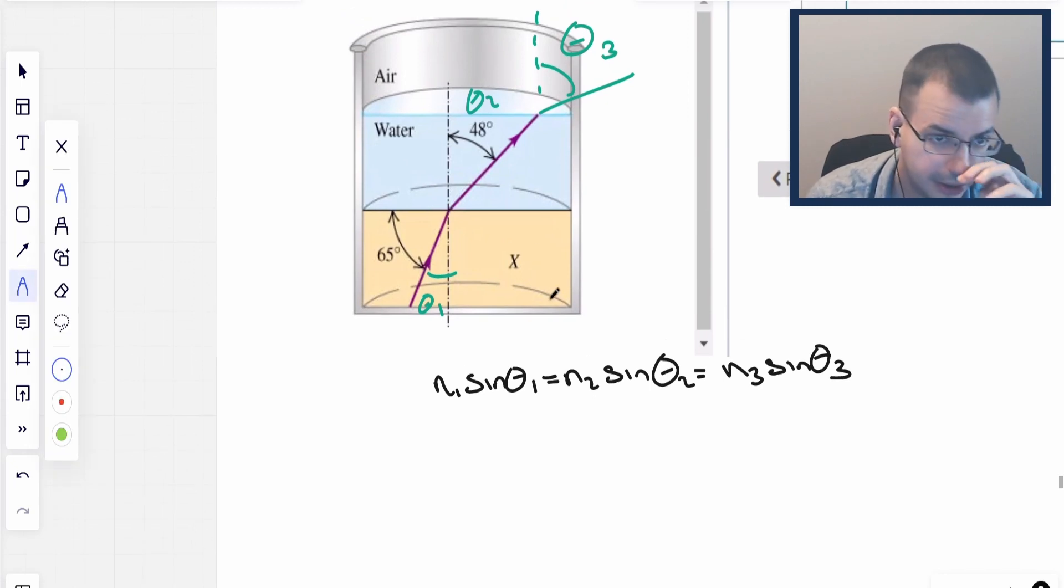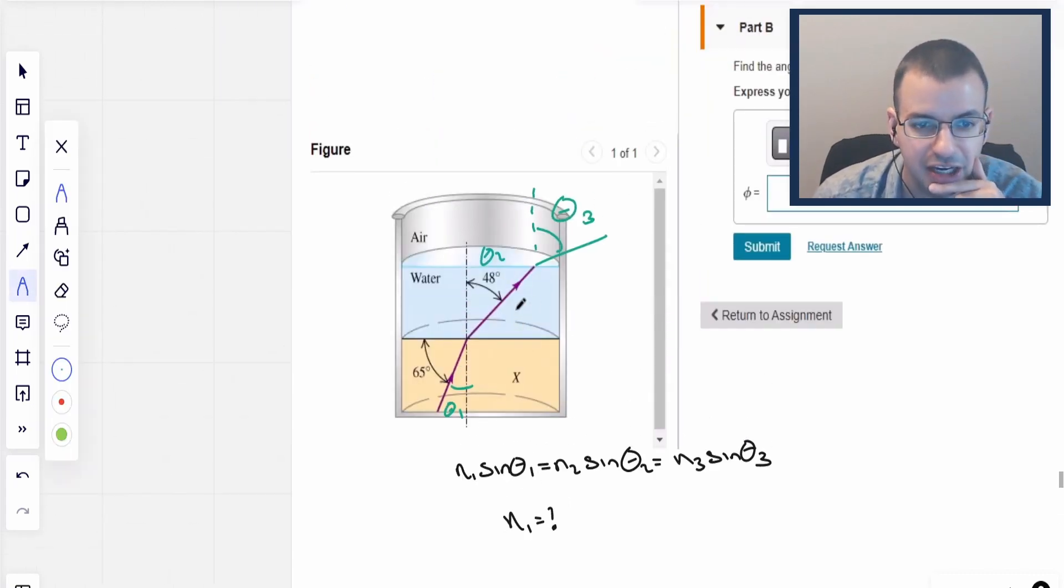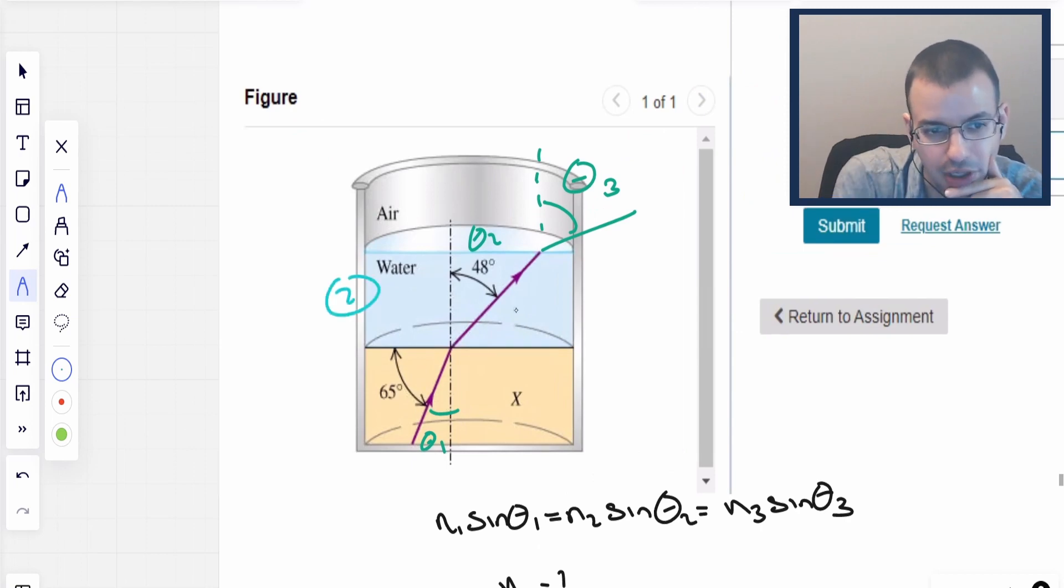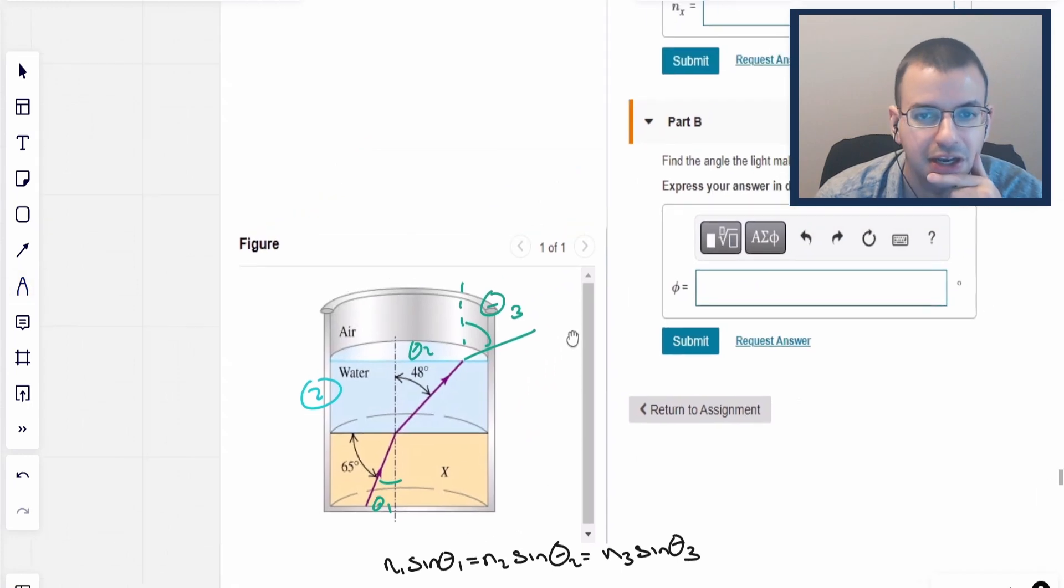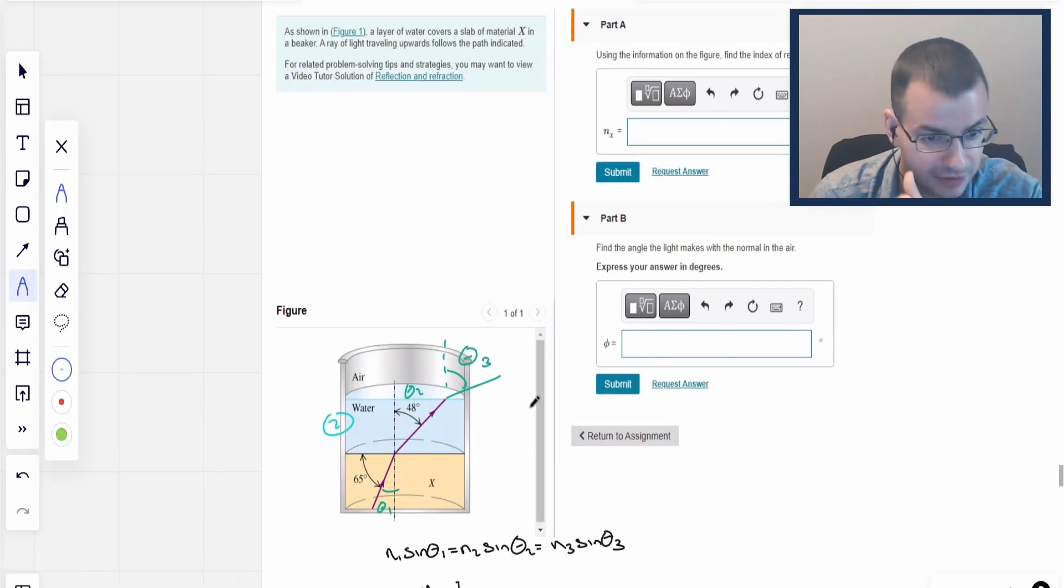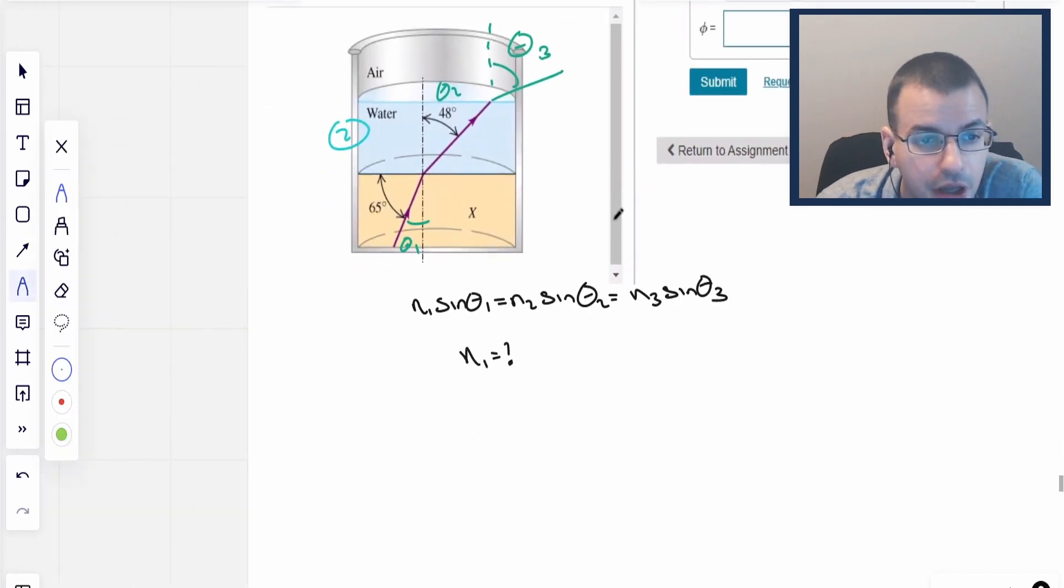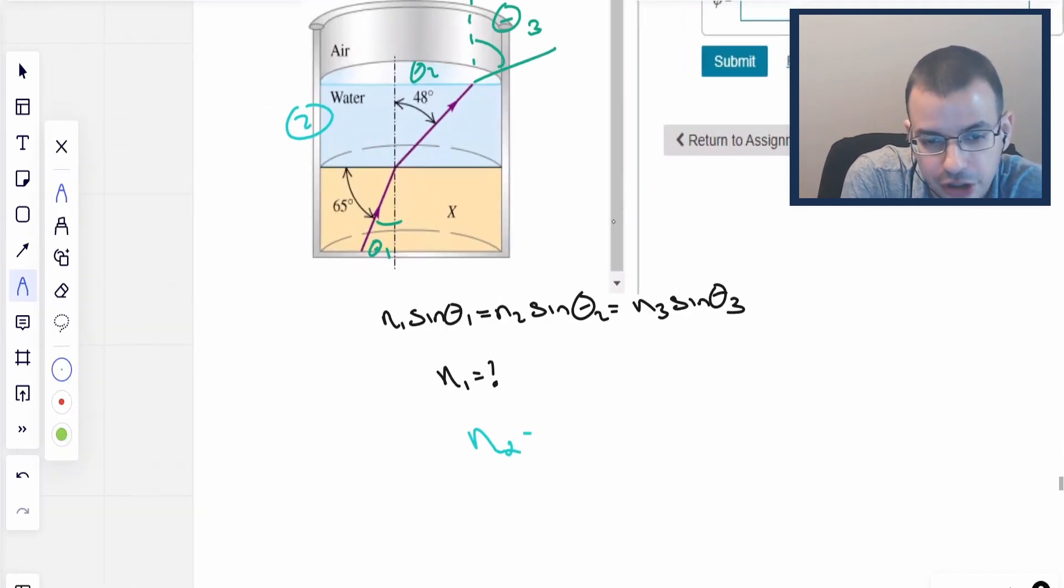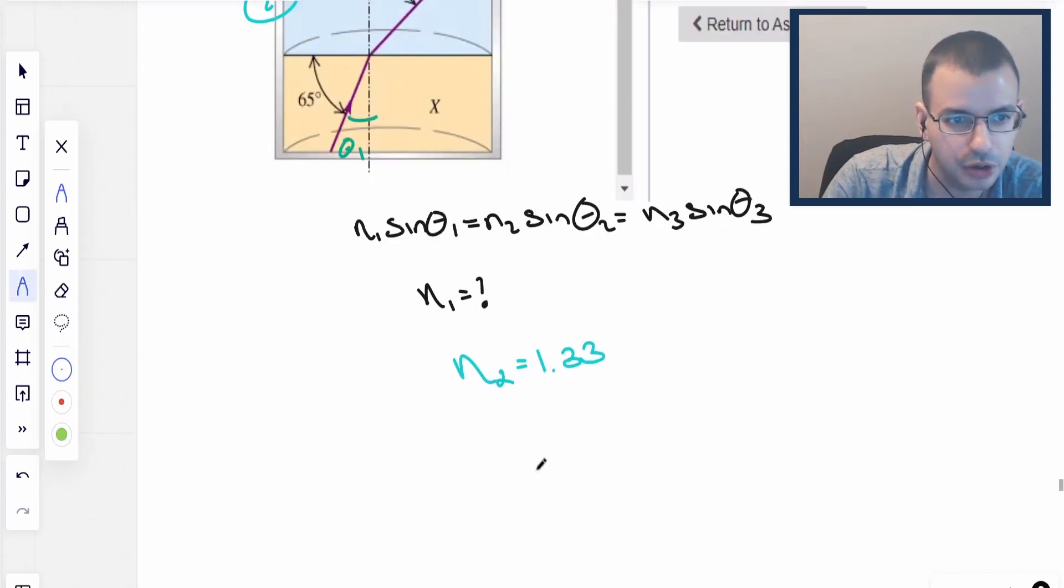So now, first thing we want to do is we want to find N1. N1 equals question mark. They don't give it to us. Now, the hard part about this problem is they don't tell us N2. This is medium 2 right here. You're expected to know it. And that's not really fair. But life isn't fair, so it's kind of hard for course. So the index refraction N2 of water is just 1.33. We're just calling it 1.33.